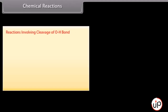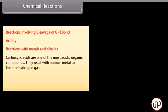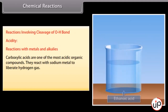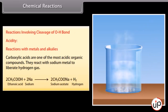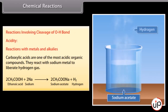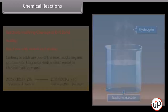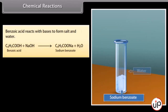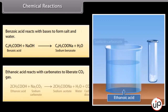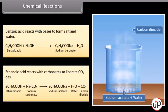Chemical reactions of carboxylic acids. Reactions involving cleavage of the O-H bond. Acidity: carboxylic acids are one of the most acidic organic compounds. They react with sodium metal to liberate hydrogen gas. Sodium metal reacts with ethanoic acid to give sodium acetate and hydrogen gas. Benzoic acid reacts with bases to form salt and water. Ethanoic acid reacts with carbonates to liberate carbon dioxide gas.